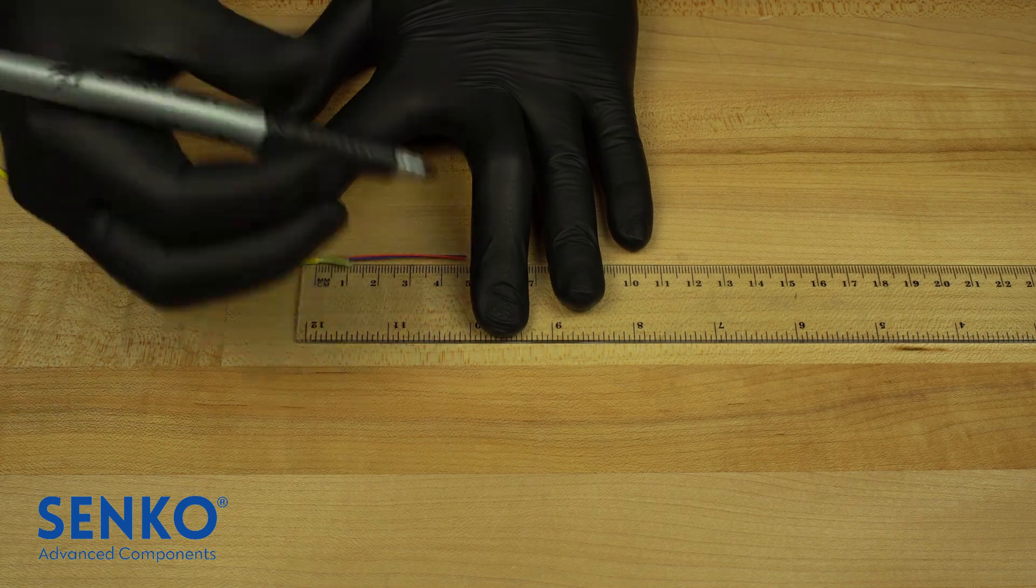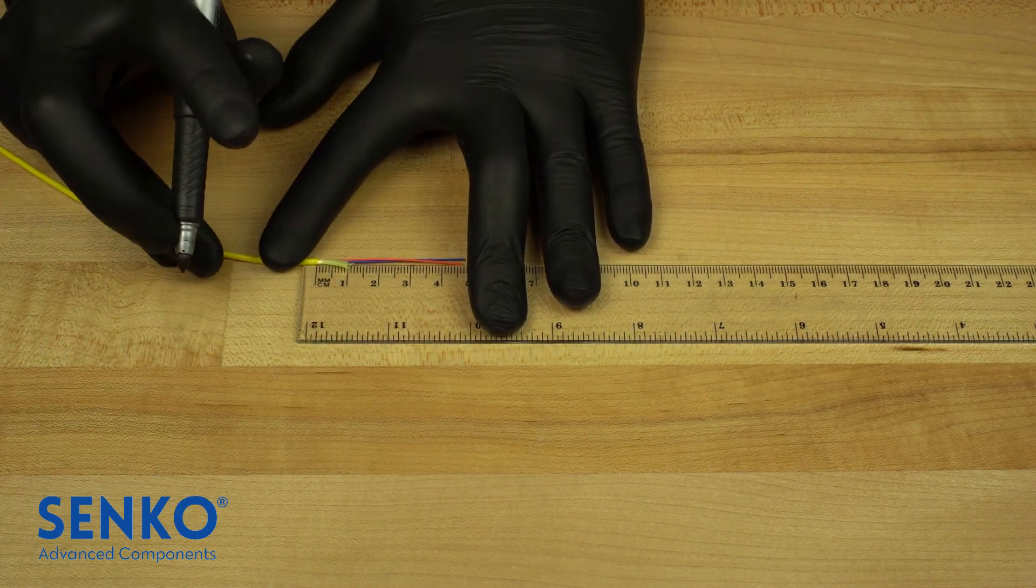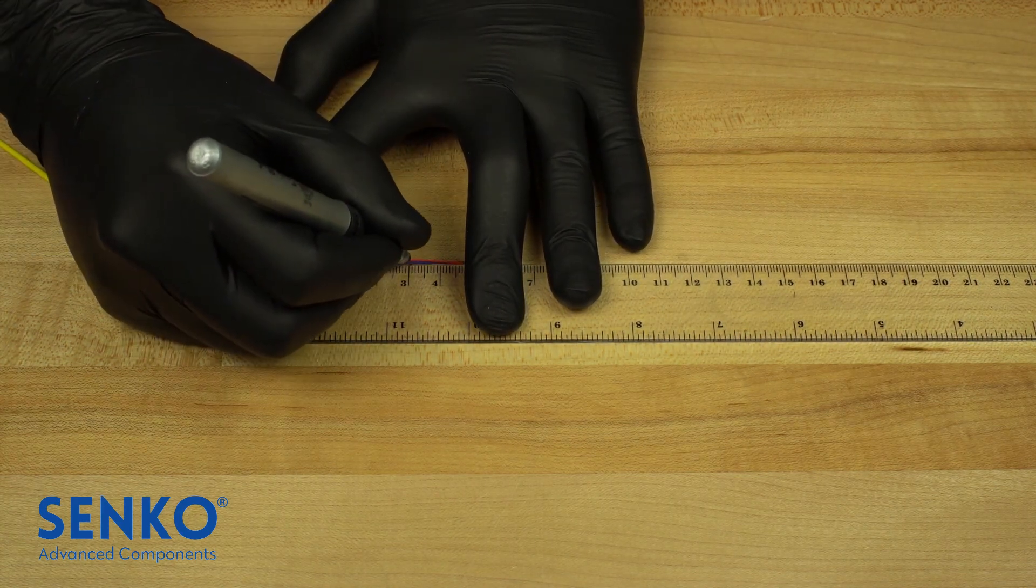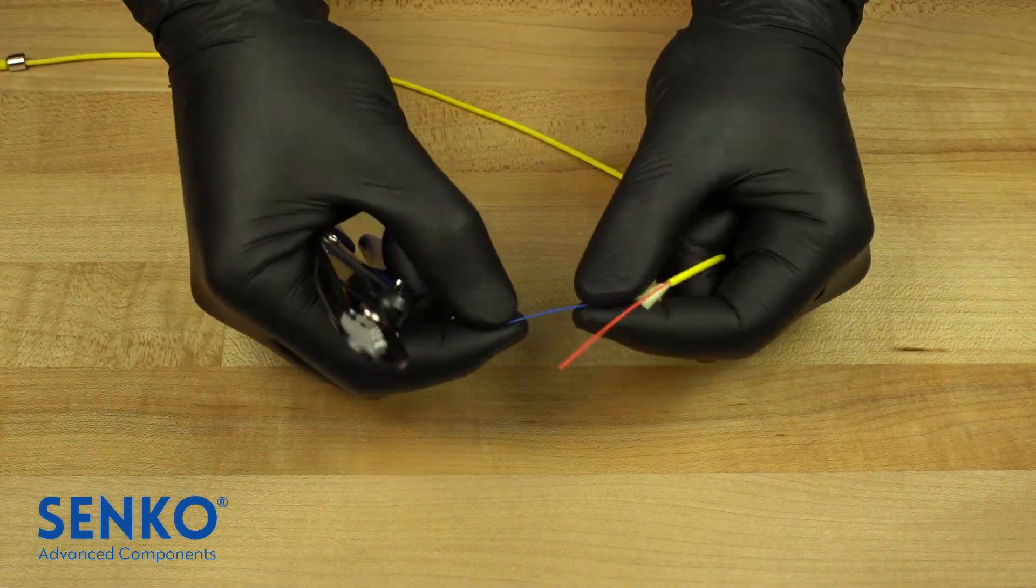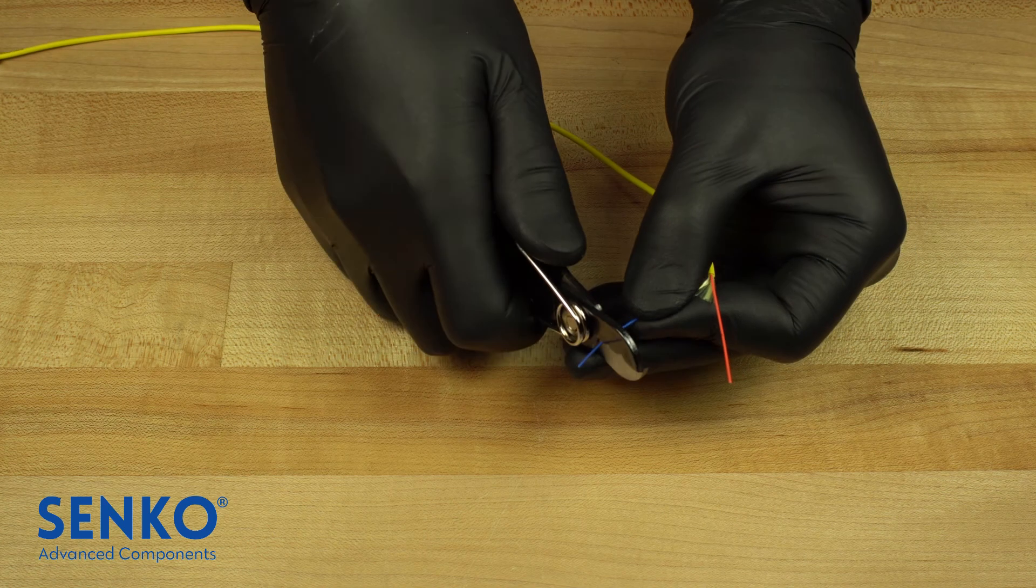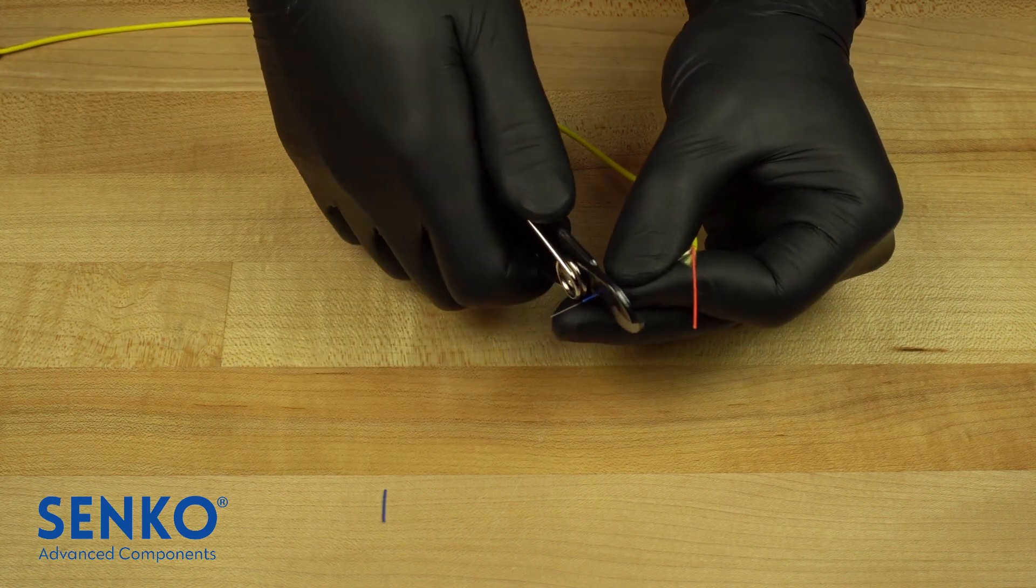Now, note that the fibers are no longer 45mm because the fibers relaxed some when they were gently pulled in the last step. Strip the 600 micron buffer from the fiber such that there is 31mm of buffered fiber coming out of the cable jacket.